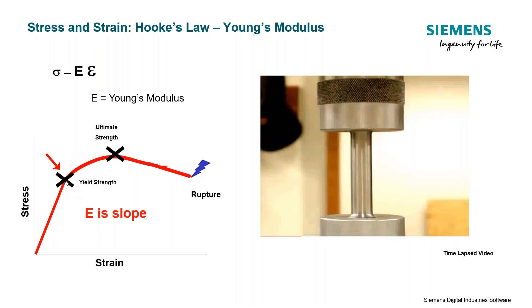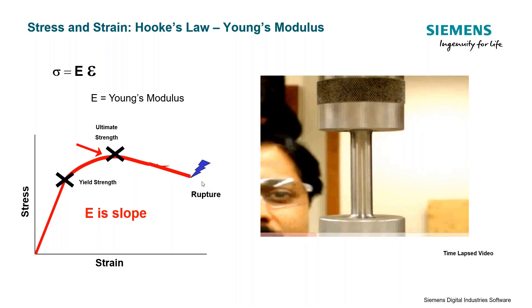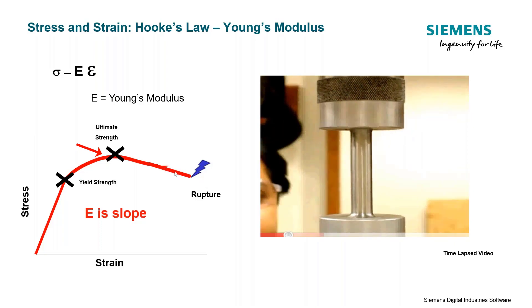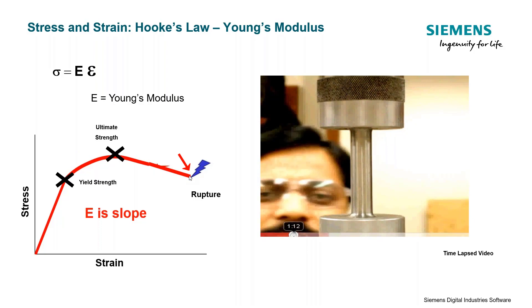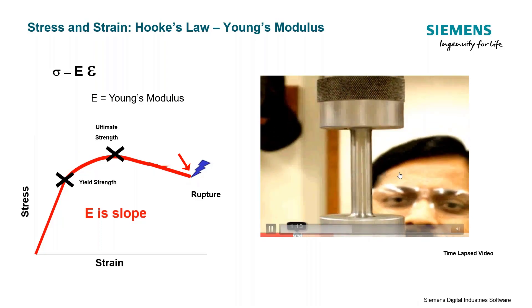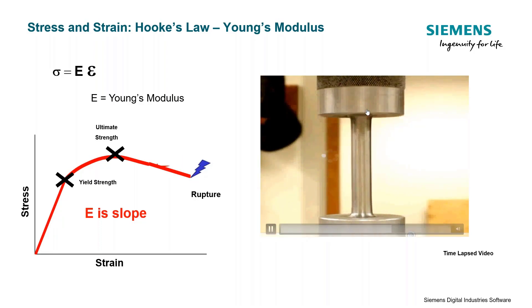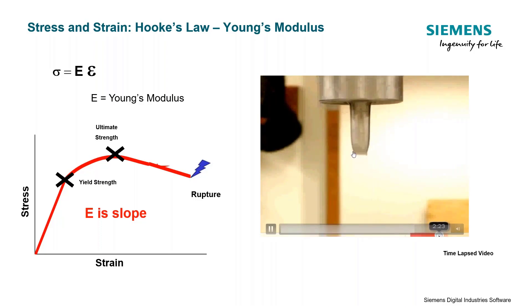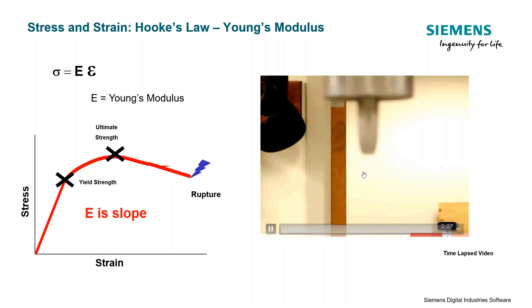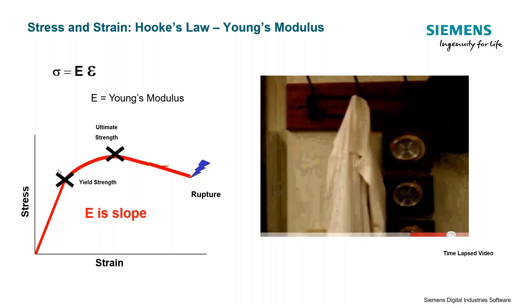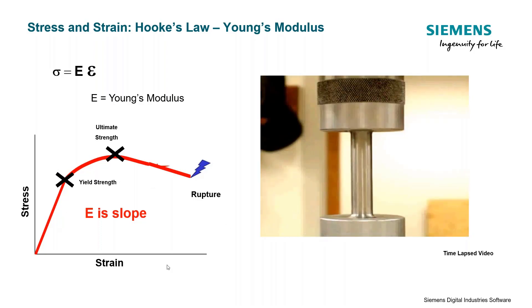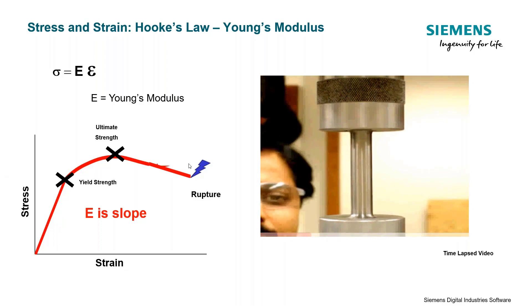On the stress versus strain curve, we see the yield strength and the ultimate strength of the material, and eventually that material will fracture and break. A typical test used to develop these stress versus strain curves is a tensile test. You can see one here where a load is applied to a bar — the bar deforms, it begins necking in the center region, and finally it fractures. This allows us to measure both the stress and the strain to develop the curve.